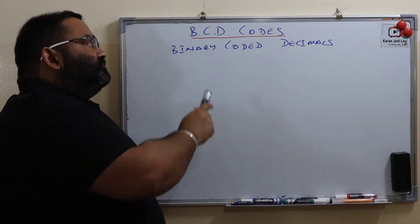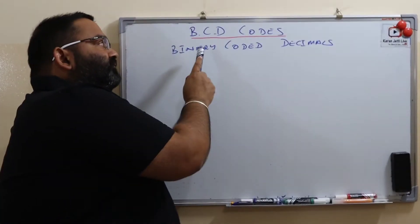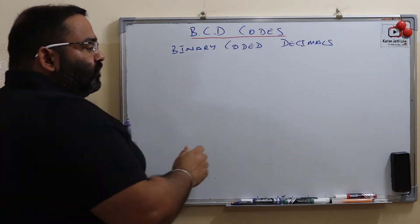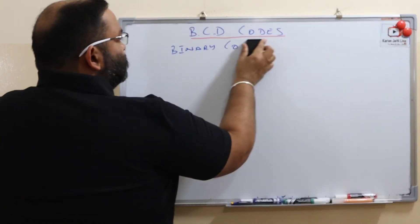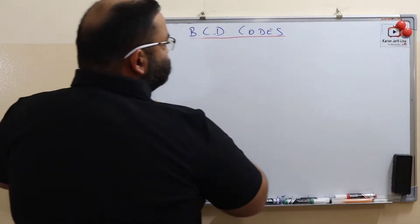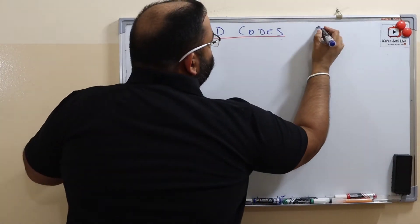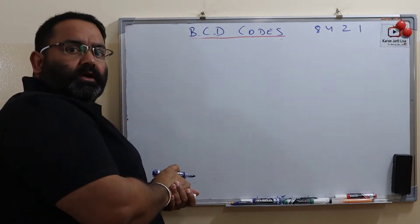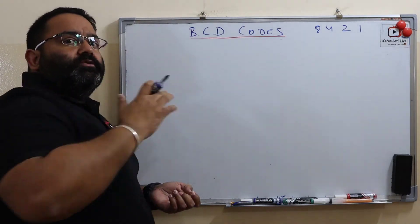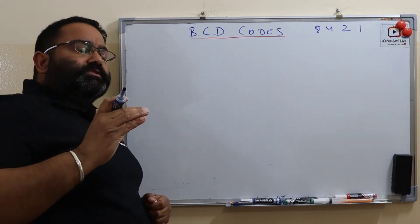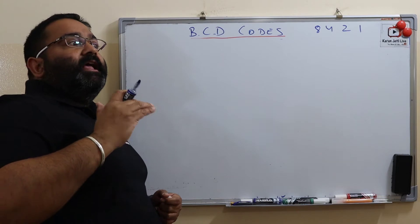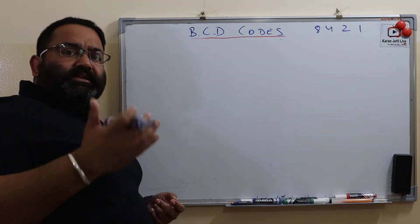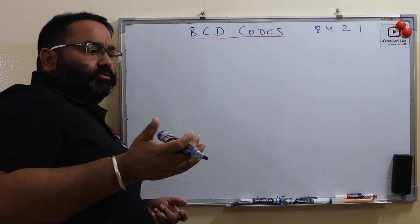BCD codes stand for binary coded decimals. BCD codes are also called as 8421 codes. BCD codes are mainly used in seven segment decoders.